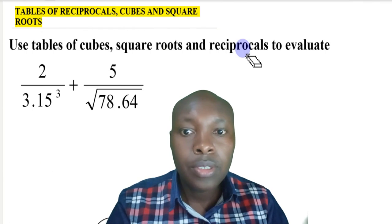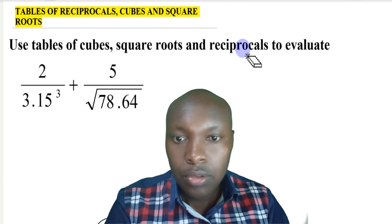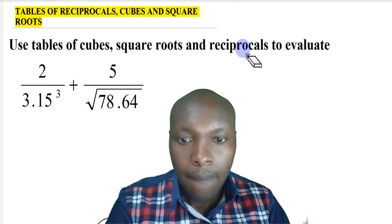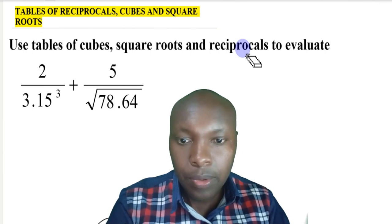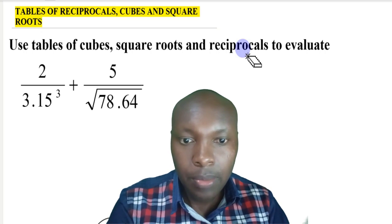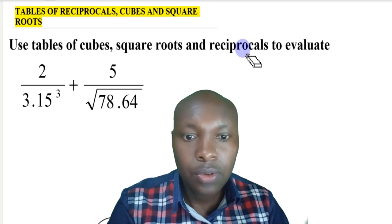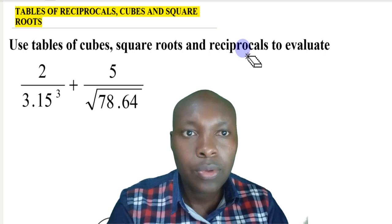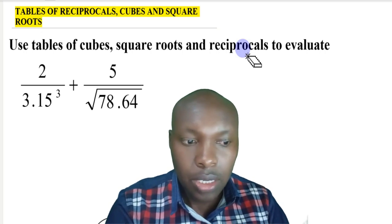Tables of Reciprocals, Cubes, and Square Roots. Use the tables of cubes, square roots, and reciprocals to evaluate 2 divided by 3.15 cubed plus 5 divided by the square root of 78.64. Let's go to the solution and see how we're supposed to solve this question.